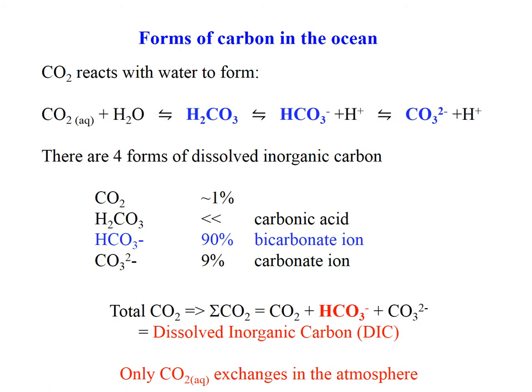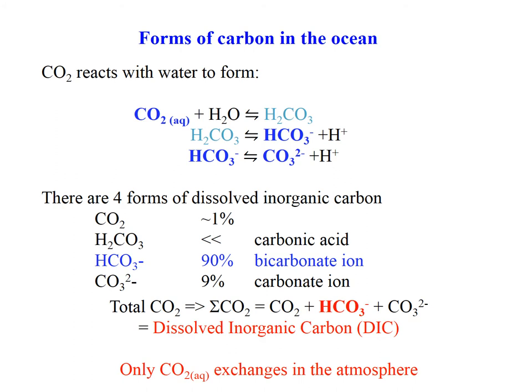The important thing for considering fluxes in and out of the ocean is that only one of these chemical species can interact with the atmosphere — the aqueous carbon dioxide. There are separate chemical reactions: CO2 gas goes to CO2 aqueous, then CO2 reacts with water to form carbonic acid, and that rapidly dissociates. The next two reactions are dissociation reactions where carbonic acid breaks apart, releases a hydrogen ion, then that happens again to form the carbonate ion.